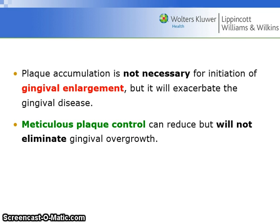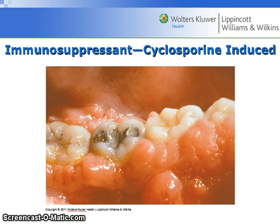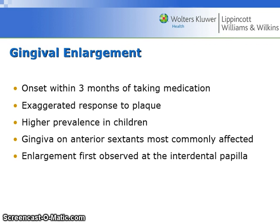Meticulous plaque control can reduce, but will not eliminate, gingival overgrowth due to medication. Cyclosporine, an immunosuppressant, can cause cyclosporine-induced hyperplasia. The onset of gingival enlargement is usually within three months of taking the medication, giving the patient an exaggerated response to plaque, with a higher prevalence in children.